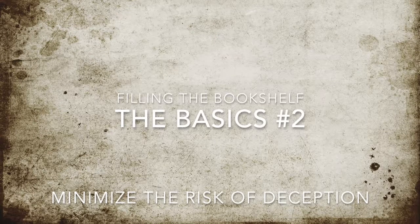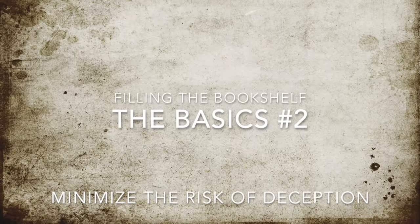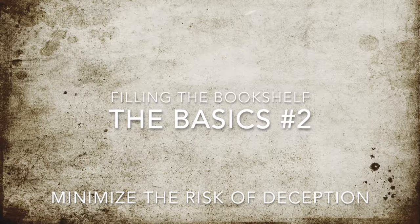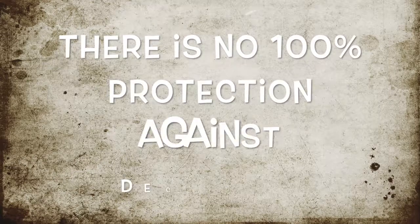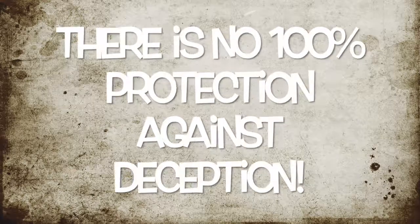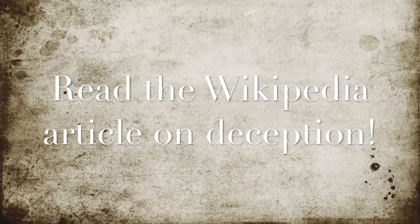In today's video I want to talk about how to minimize the risk of getting deceived. I consider it to be impossible to be a hundred percent sure not to be deceived or misled. Many things I will say will be based on the Wikipedia article on deception, and I will provide the link in the description. Deception includes several types of communications or omissions that serve to distort or omit the complete truth. Examples range from false statements to misleading claims in which relevant information is omitted, leading the receiver to infer false conclusions. Deception itself is intentionally managing verbal or nonverbal messages so that the message receiver will believe in a way that the message sender knows is false.